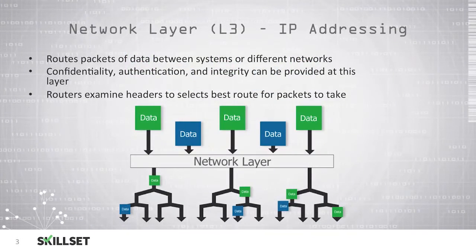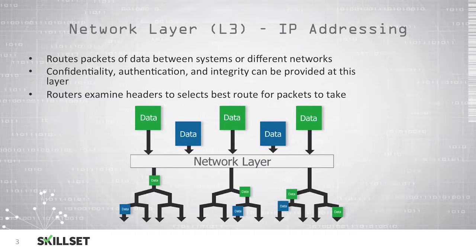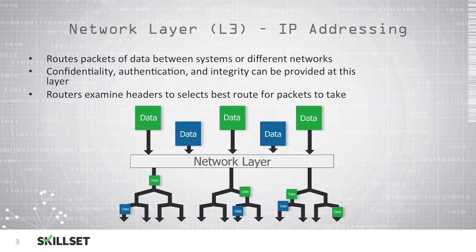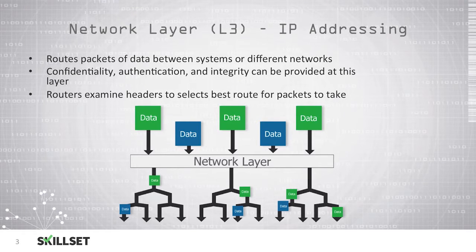The network layer, or layer 3 of the OSI model, is responsible for internet protocol addressing. This layer is responsible for routing packets between systems or between different networks. At this layer we can provide confidentiality, authentication, and integrity. Routers will examine the headers of packets to select the best route for a packet to take in order for it to get to its destination as efficiently as possible. Routers are our network devices that operate at the third layer, or the network layer, of the OSI model.